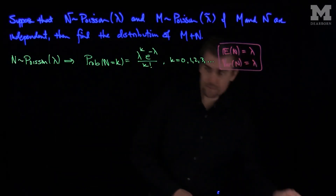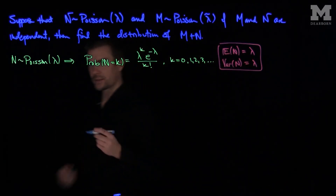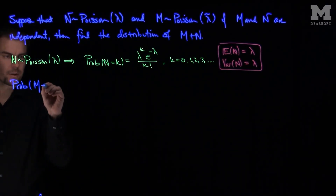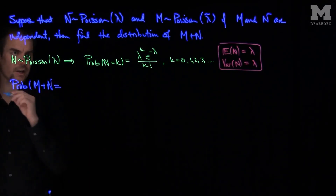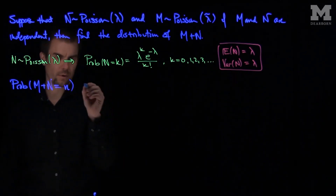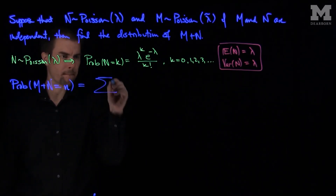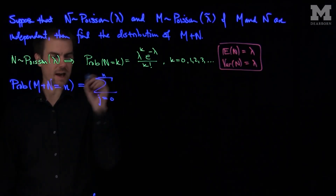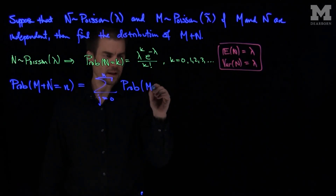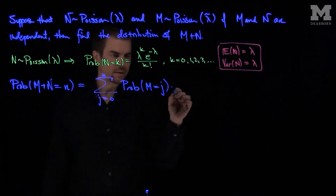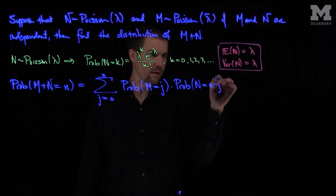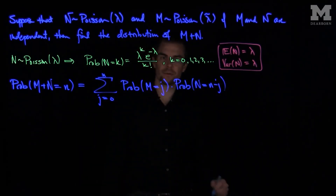So it's always good to recall these fundamental properties of the Poisson distribution: that the mean and variance are both equal to the parameter. If we wish to find the distribution of m plus n, I'd like to find the probability that m plus n equals some value n. By the convolution formula, this will be the sum j from 0 up to n of the probability that m equals j times the probability that n equals n minus j. This is our discrete convolution formula.